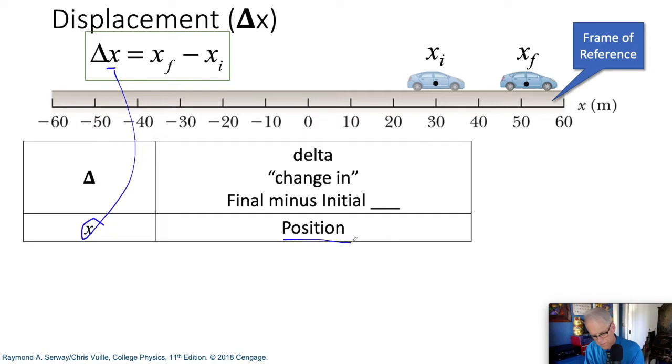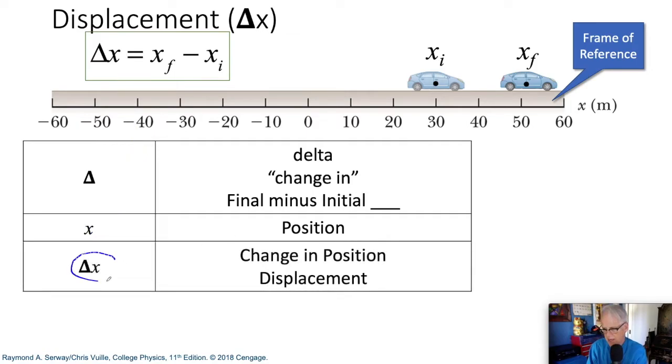We put both of those together. We get delta x. That is our displacement. It's the change in position. And that's the definition of displacement.